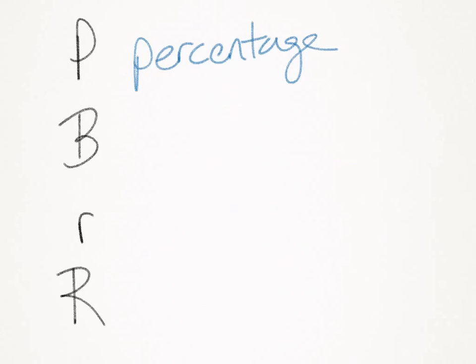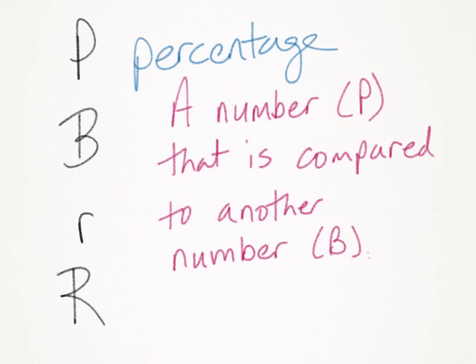For percent proportion, there are three different variables that you need to keep in mind. The first term is percentage. Now, don't get this confused with percent. It's not the same thing. Percentage is going to be a number that is compared to another number, and we're going to compare that number to the big B, which is base.